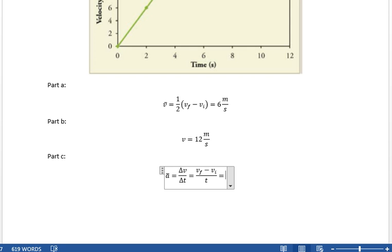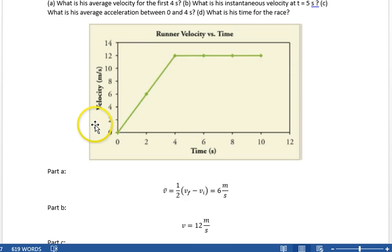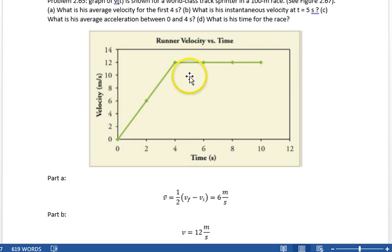So, this is V final minus V initial divided by the time. So, 12 meters per second divided by 4 seconds. So, we get 3 meters per second squared is his average acceleration over that amount of time.